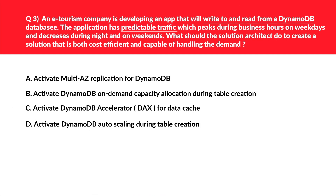This question is related to DynamoDB — you need to be familiar with the concepts. Option A is multi-AZ replication, which is meant to achieve high availability. Multi-AZ won't help with variable predictable workloads throughout the day, so this is an incorrect choice. Option C is DynamoDB Accelerator (DAX) for data caching. DAX works for read-intensive applications like a cache. Since the application has read-write workloads as mentioned in the question, DAX will not work, and option C is incorrect.